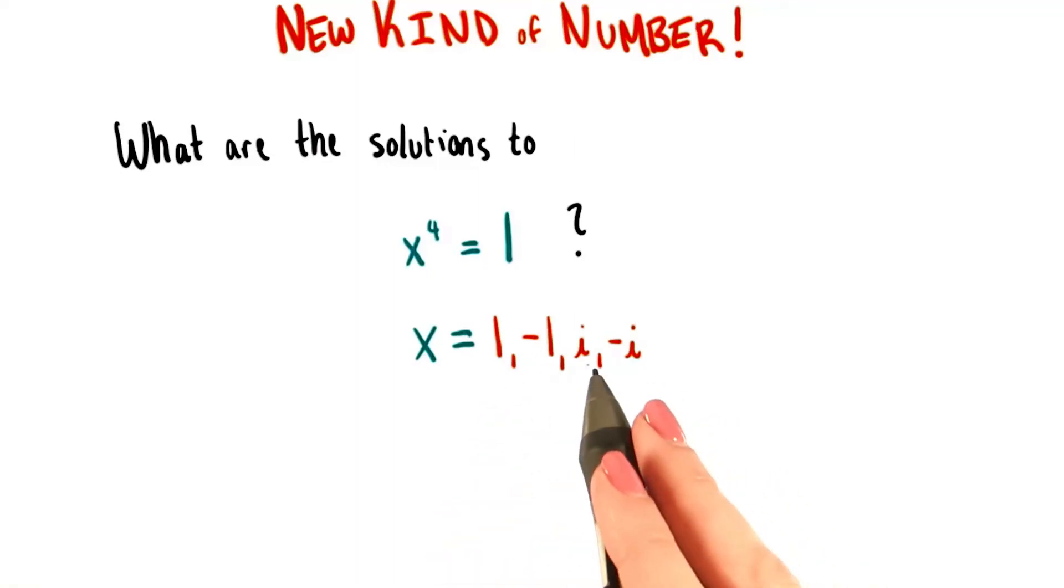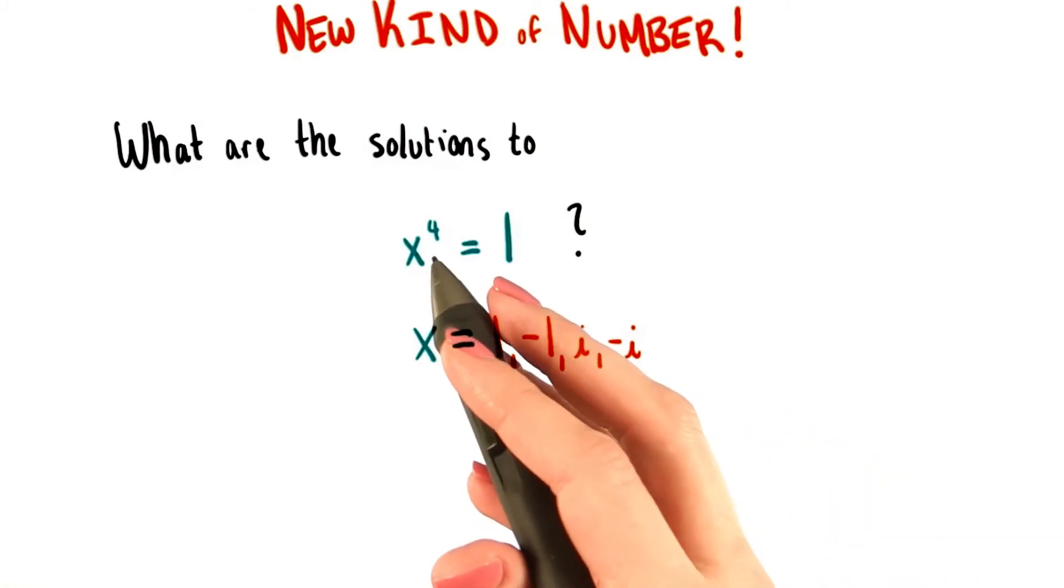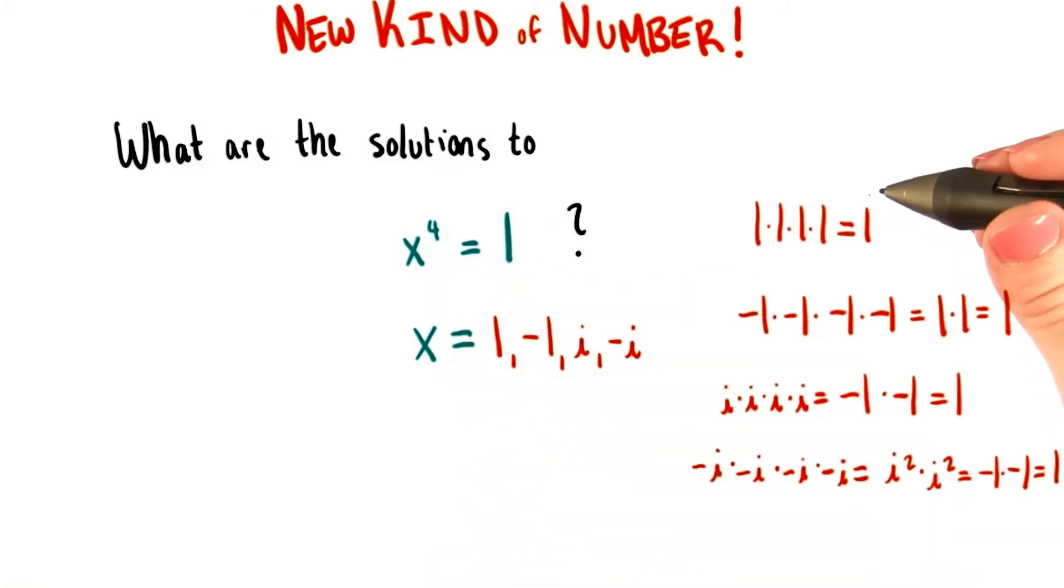The numbers 1, negative 1, i, and negative i, all, when taken to the fourth power, equal 1. In case you're curious about how exactly this works, I've written them all out for you here.